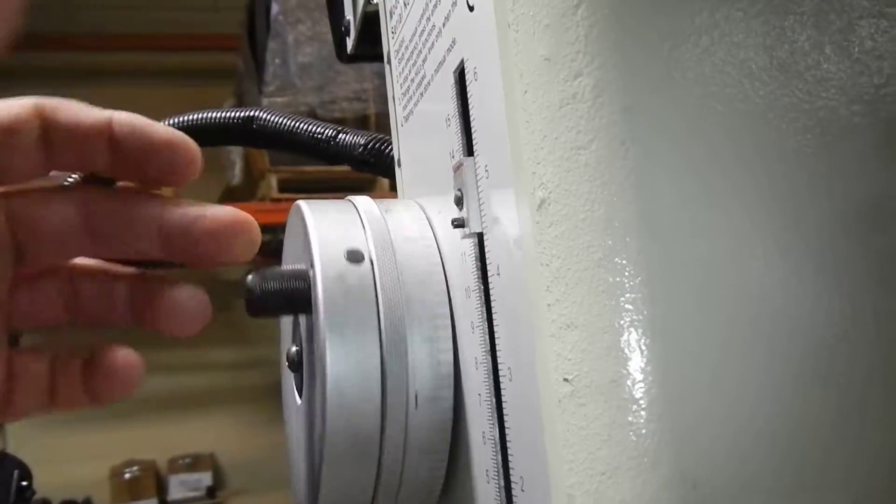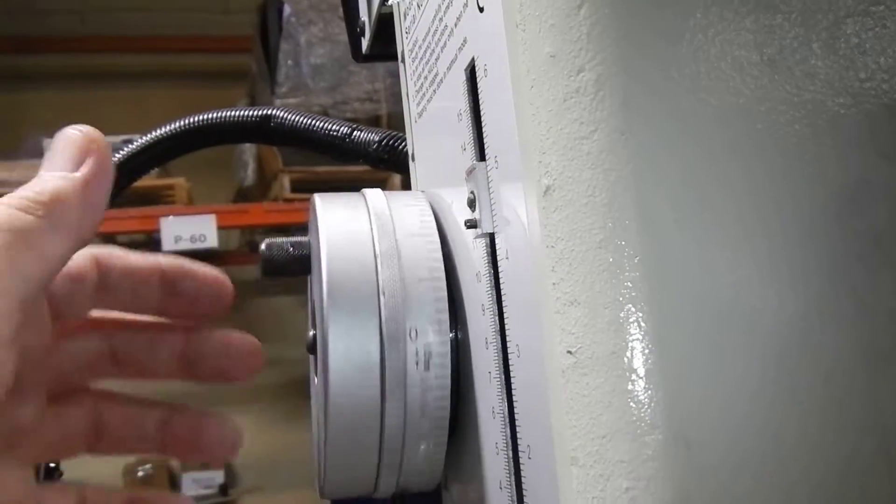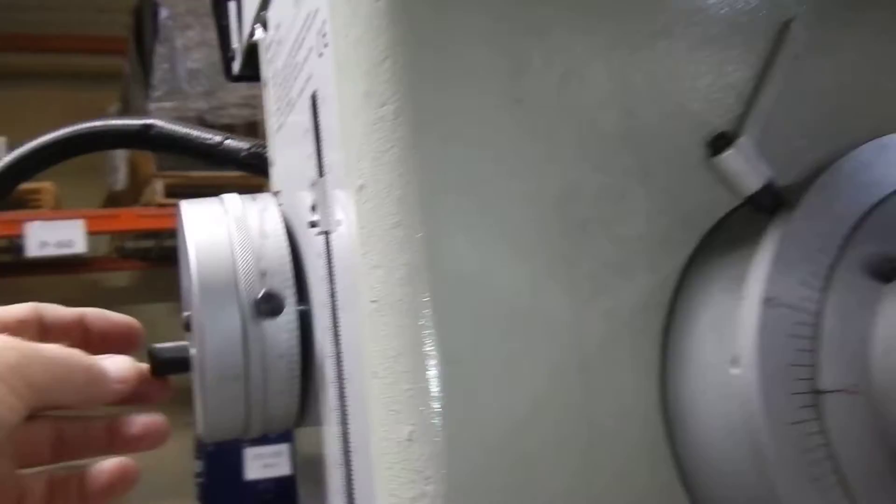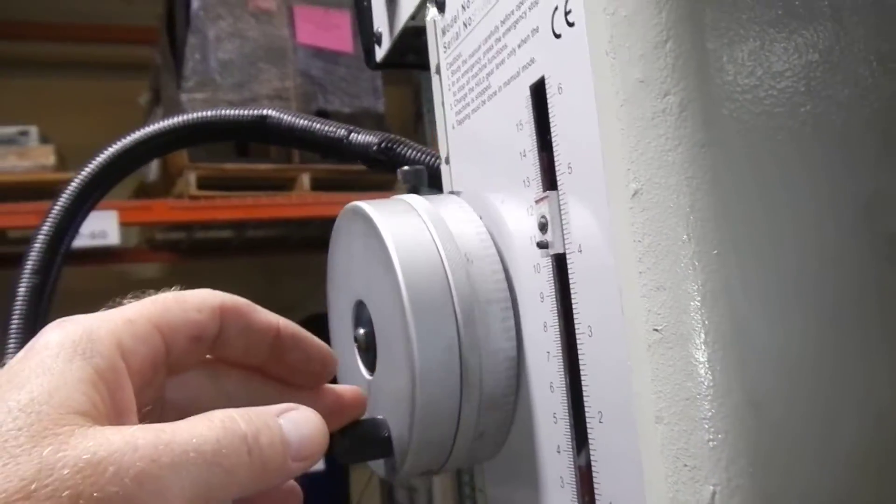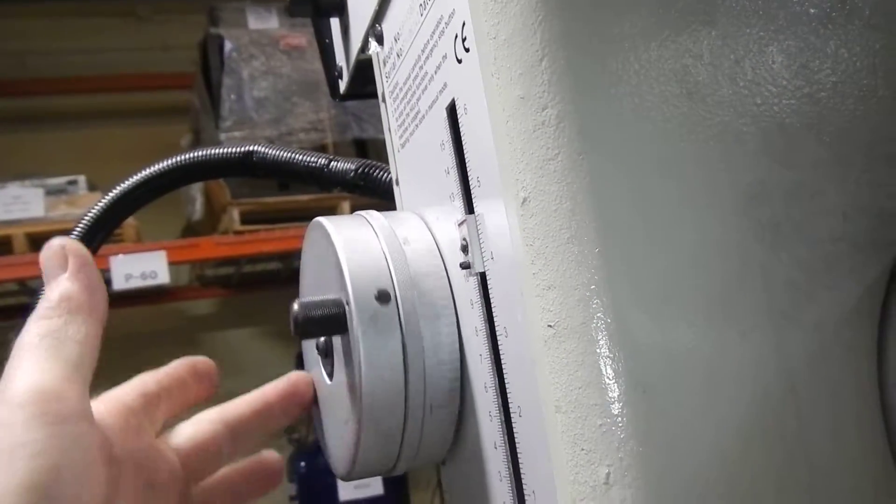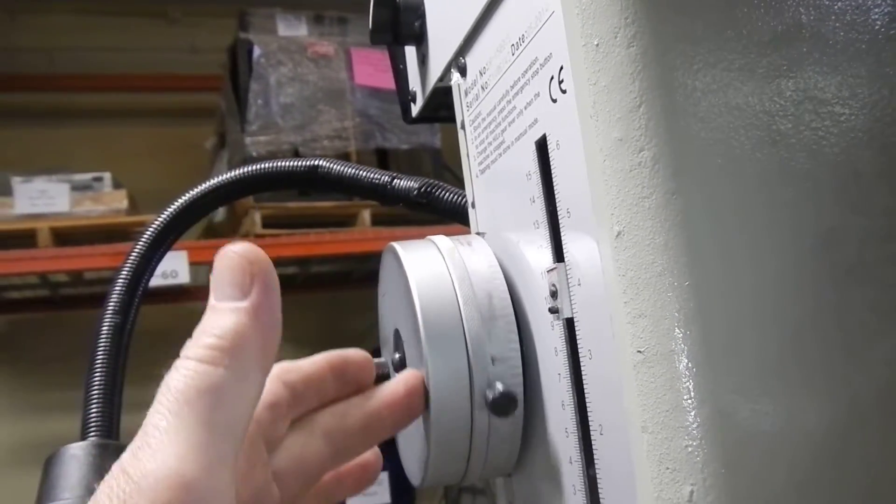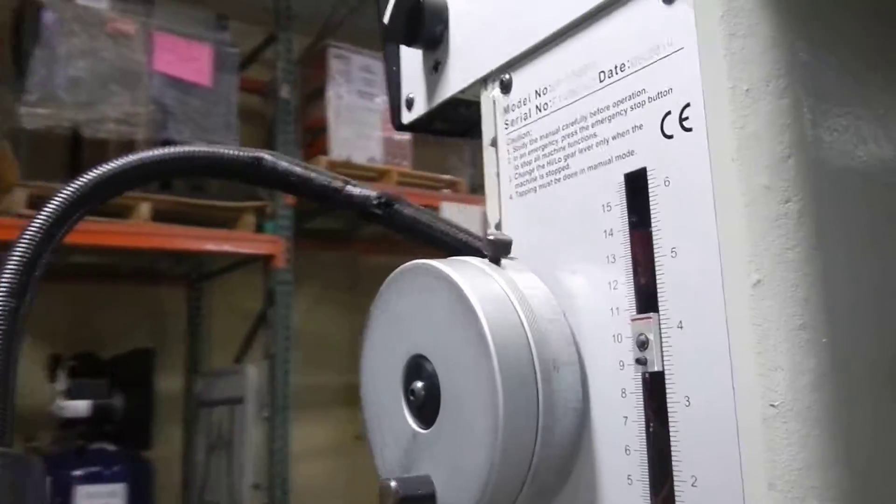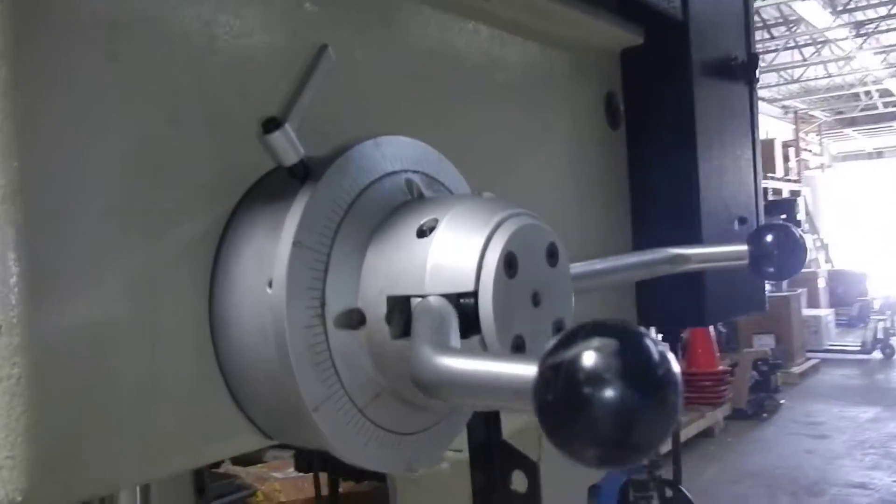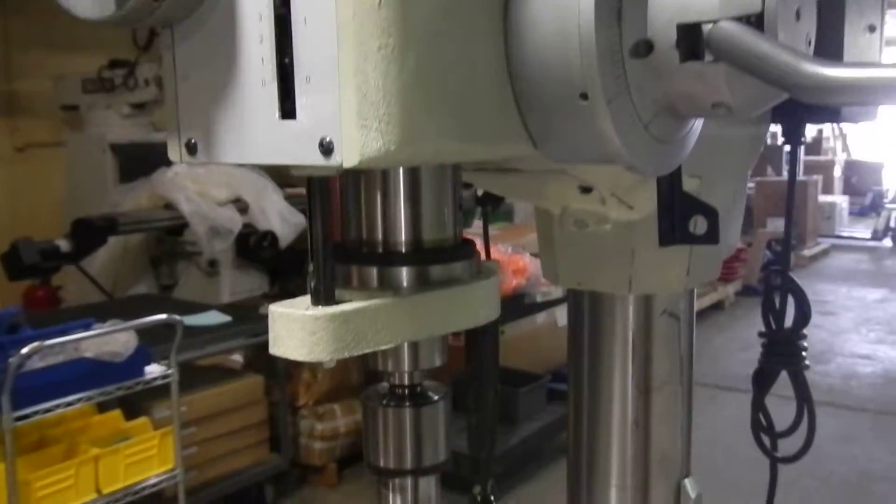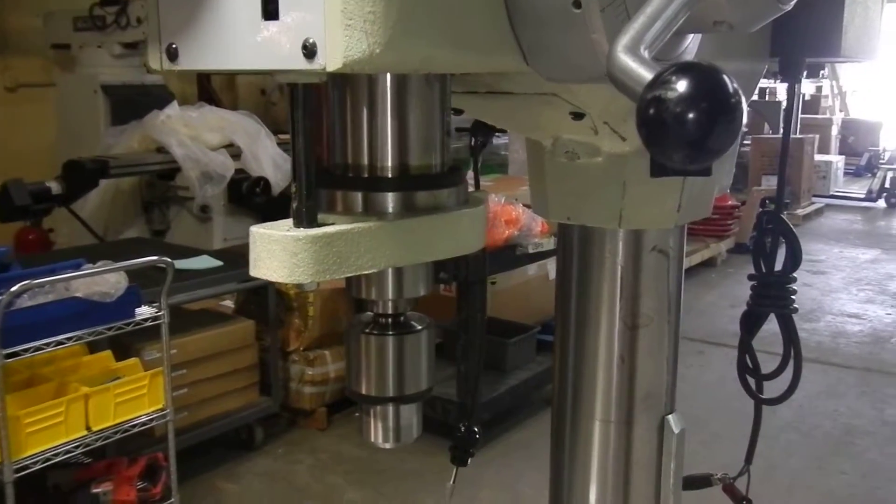Now this down feed hand wheel took a hit. It still operates, but it is wobbling. You might be able to straighten that out, but it doesn't really interfere with the operation of the machine. As you can see, the down feed is operating now.